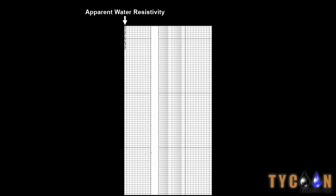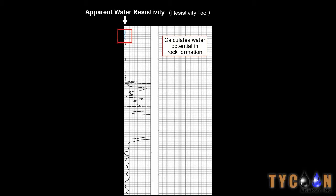This data is called the apparent water resistivity curve. It indicates the potential for water in the rock formations surrounding the wellbore. At the top of the log, the line is at the left, which indicates more than likely the formation is wet or shaley.